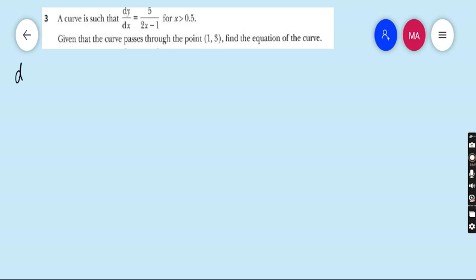Let's start question number 3. A curve is such that dy by dx equals to 5 upon 2x minus 1. Given that the curve passes through the point 1 comma 3, find the equation of the curve for x greater than 0.5. If x is 0.5 then the function is undefined, so this for x greater than 0.5 doesn't impact on the question, just information.